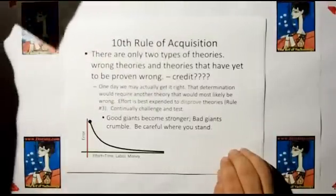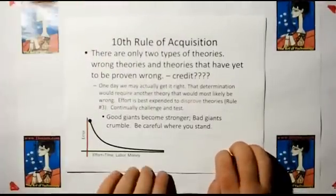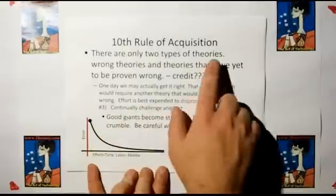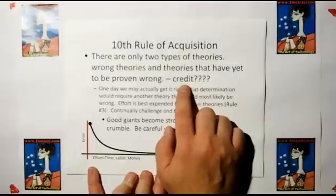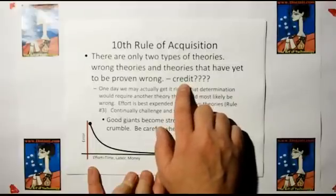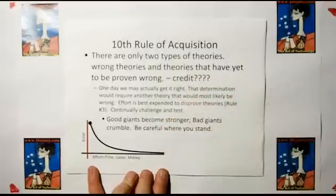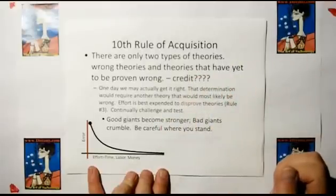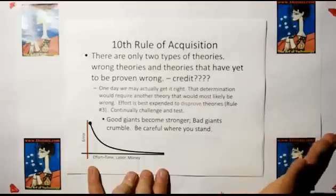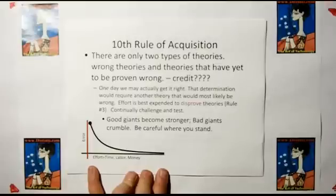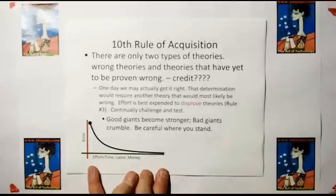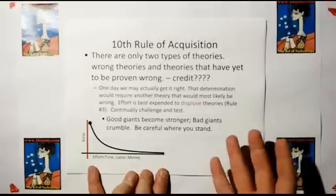As we keep going, we come up with the tenth rule of acquisition: there are only two types of theories — wrong theories, and theories that have yet to be proven wrong. One day we may actually get stuff right, but it's a good idea not to assume we're ever right — never assume anything we know is irrefutable. And regarding old giants — the old theories we have: if they can withstand the new observations, they're good. If they do not predict the new observations, they should be thrown out. We should not have false appreciation for things that aren't right.